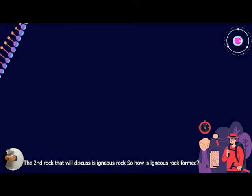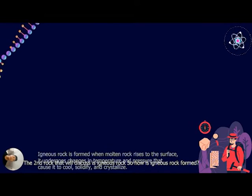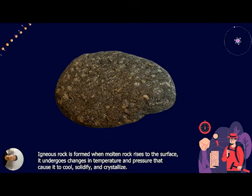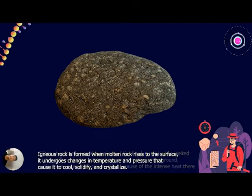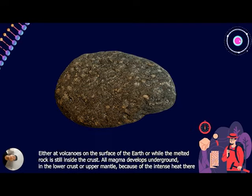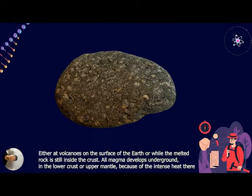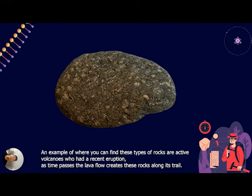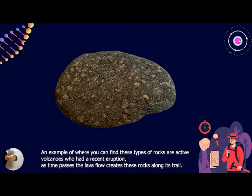The second rock we'll discuss is igneous rock. Igneous rock is formed when molten rock reaches the surface and undergoes changes in temperature and pressure that cause it to cool, solidify, and crystallize — either from volcanoes on the surface or while the molten rock is still inside the Earth. All magma develops underground in the lower crust or upper mantle because of the intense heat there. An example of where you can find these rocks is near active volcanoes that had a recent eruption — as time passes, the lava flow creates these rocks.